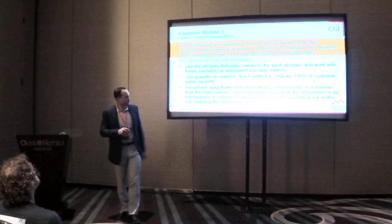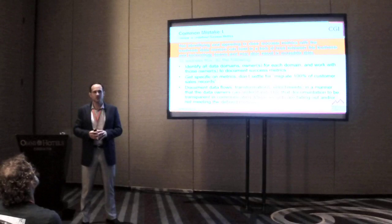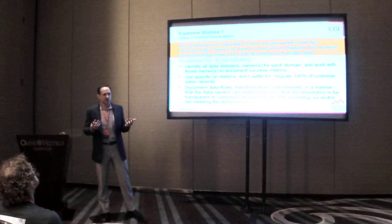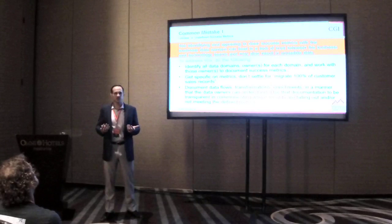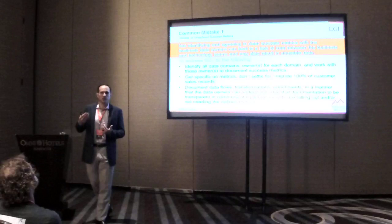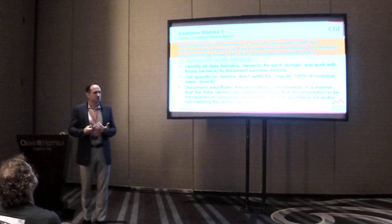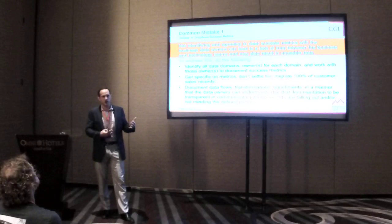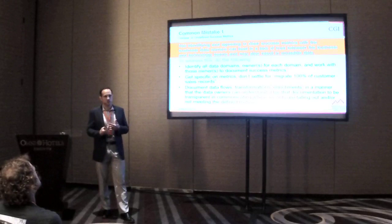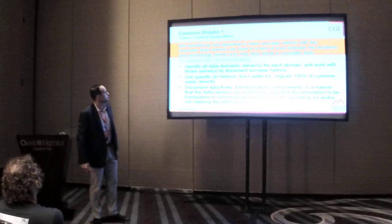You've probably got bad data in that old system — how many people have a system that doesn't have the same customer in there twice? So the old million records here, million records there doesn't fly, because you want to take this opportunity to clean up that data. Work with your business owners in each data domain to define success criteria for their specific domain. Document the flows, transitions, and processes so that when something goes wrong you can explain to the business why it went wrong, how you're going to correct it.